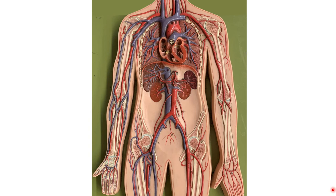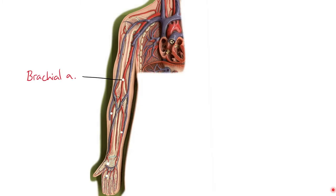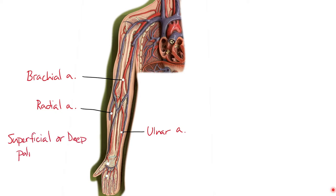As we continue to follow blood into the forearm, near the coronoid fossa of the humerus the brachial artery is going to split into the radial artery and the ulnar artery. These arteries follow the radius and ulna distally all the way to the wrist, where they anastomose to form a superficial palmar arch and a deep palmar arch. The radial is the primary contributor to the deep palmar arch and the ulnar artery is the main contributor to the superficial palmar arch. Both arches supply blood to the hand and the digital arteries.